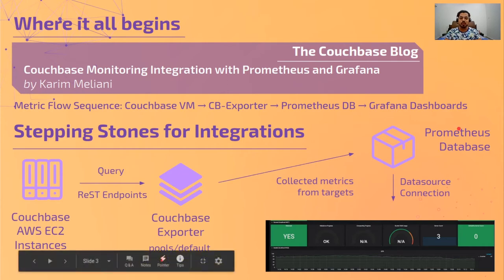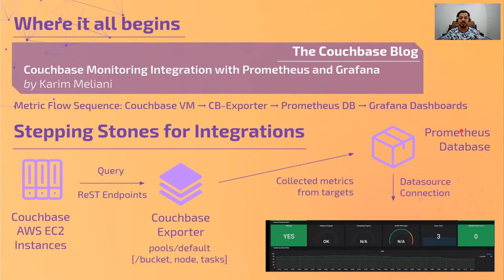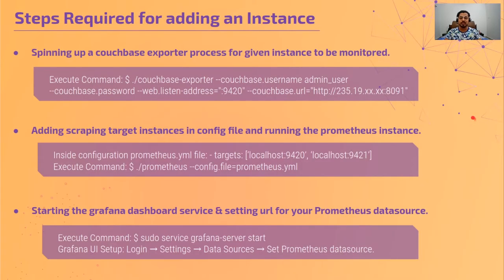Now focusing on how these tools actually work in a disintegrated manner and what effort is required. First, we need a command that runs the Couchbase exporter process with a given port number and Couchbase credentials — this must be done manually. Second, a hardcoded Prometheus YAML with those targets and the same port number must be provided as a startup configuration file, and it doesn't get dynamically updated without node exporter.